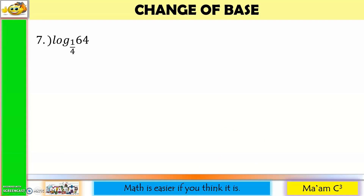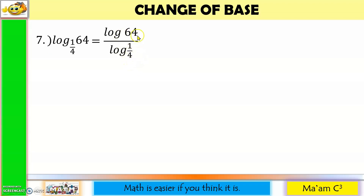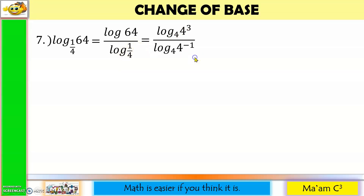Next one: the logarithm of 64 to the base 1 fourth. So this will become the logarithm of 64 divided by the logarithm of 1 fourth. Since I can see 4 here, I'm going to express 64 as 4 cubed to the base 4, so my x and b are still the same. Then I'm going to bring up 4, so the exponent will become negative 1. The answer in my numerator is 3 and in my denominator is negative 1. And 3 divided by negative 1 is negative 3.